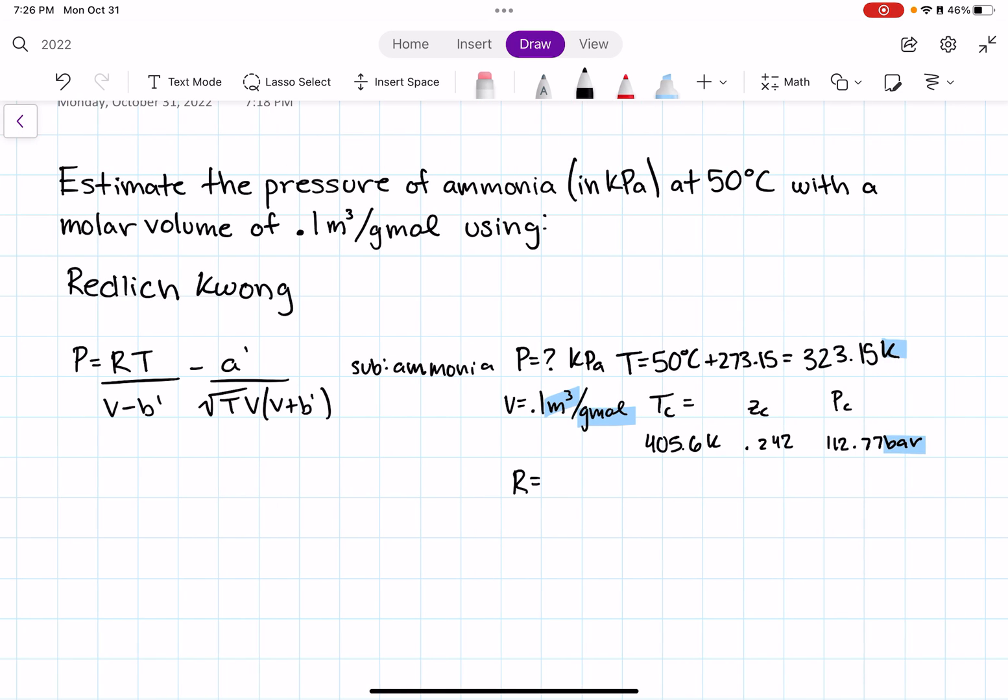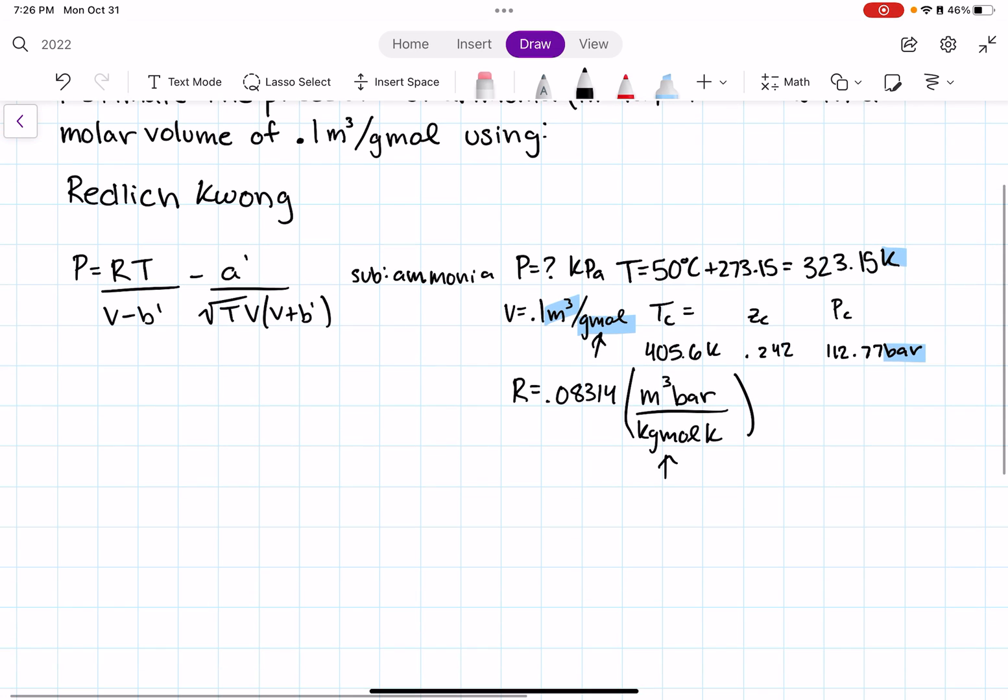So R value that I'm going to use is 0.08314. And I'm going to go ahead and write down the units to make sure I don't mess up and make sure I'm organized so I don't forget what my units are. Our molar volume is given in 0.1 meters cubed per gram mole. We don't want gram mole because the R value that we are using is kilogram mole. So I'm going to go ahead and convert that into kilogram moles. I have 0.1 meters cubed per gram mole. So there is 1,000 gram moles in 1 kilogram mole. So we have 100 meters cubed per kilogram mole. And now we have our units correct, so we'll continue to plug things in.